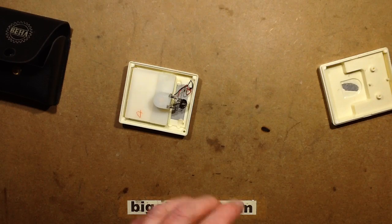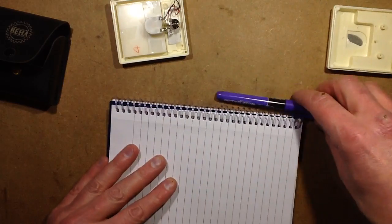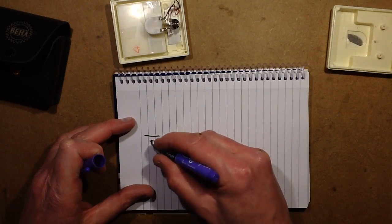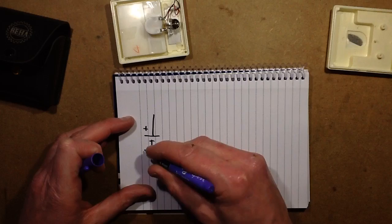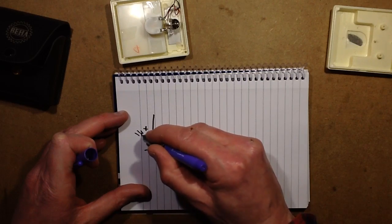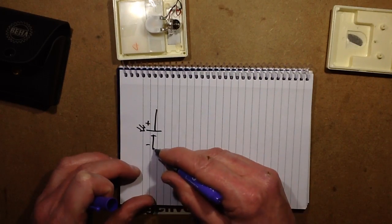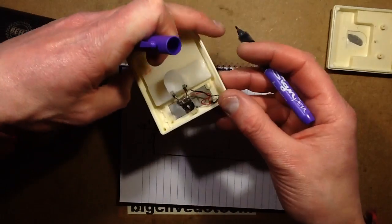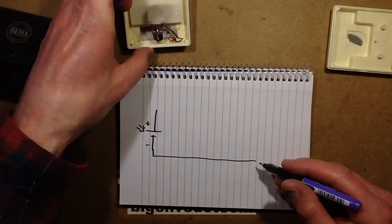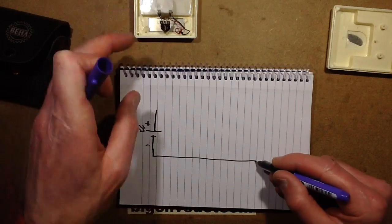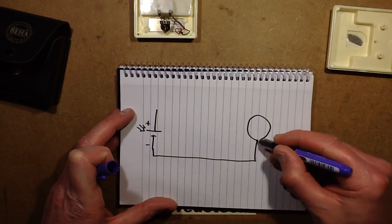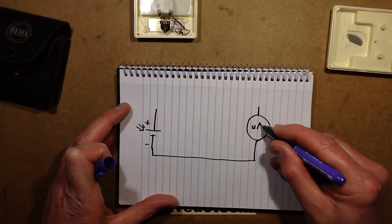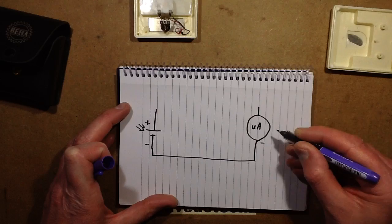Notepad. So, let's start with the solar cell. There's plus, minus, and a couple of arrows to indicate light shining on it. We'll go across to the negative of that goes straight to the negative of the meter. And I'll draw the meter just as a circle with microamps in it. Negative, positive.